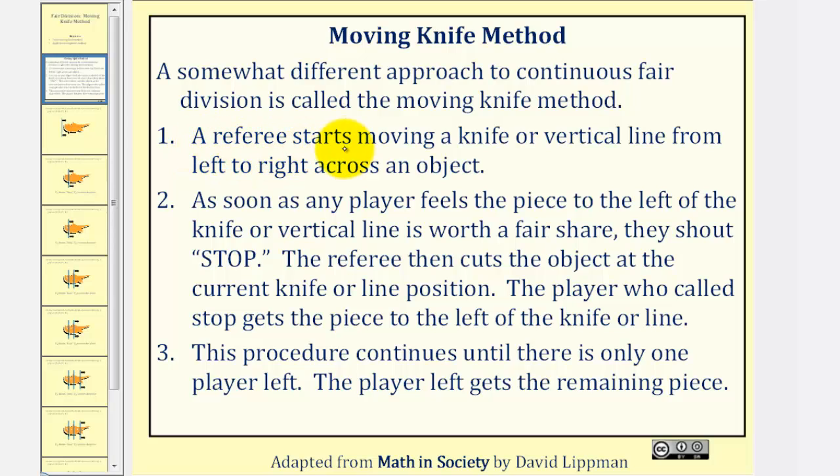Step one, a referee starts moving a knife or vertical line from left to right across an object. Two, as soon as any player feels the piece to the left of the knife or vertical line is worth a fair share,